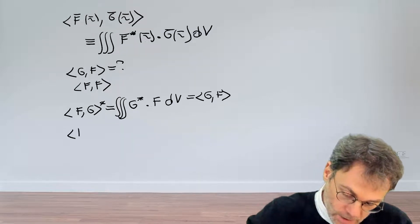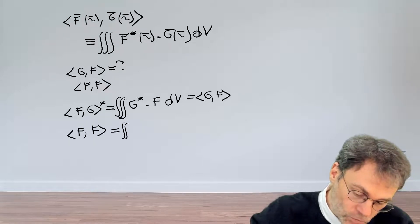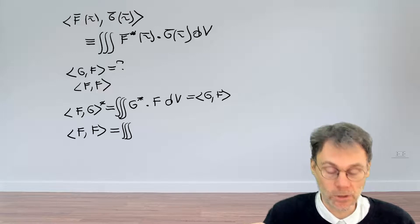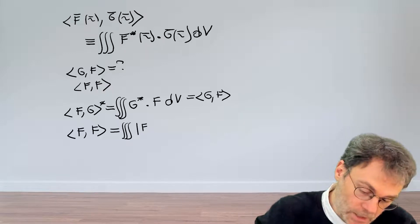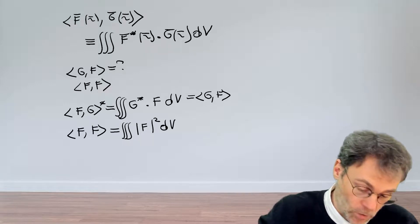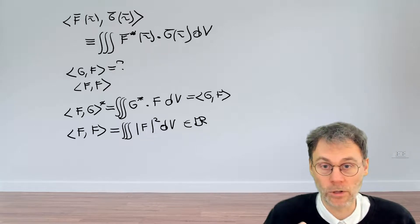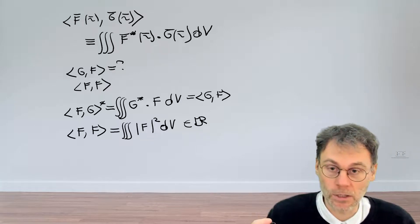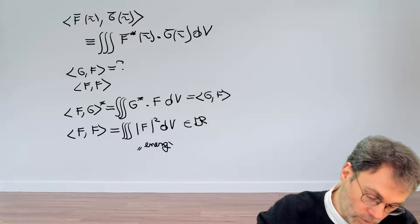What do we get when we take the scalar product of a function with itself? Well, then we basically end up taking the integral of f times f complex conjugate, so this is going to be the norm squared of f dV, which will be, even if f is complex, will be a real number and moreover a positive number. So this means that we can interpret this as some kind of energy of your vector function.